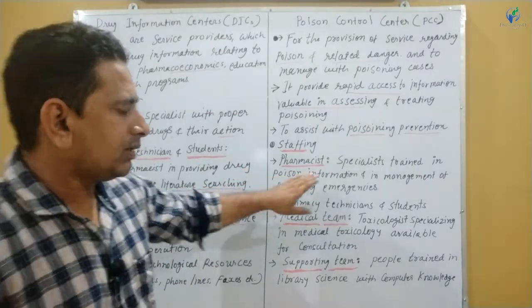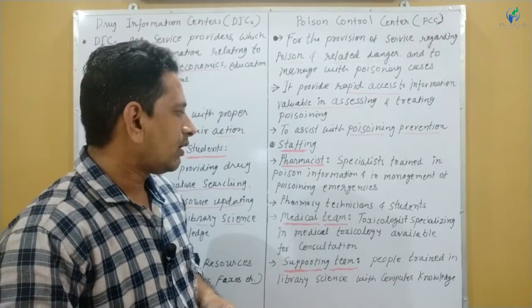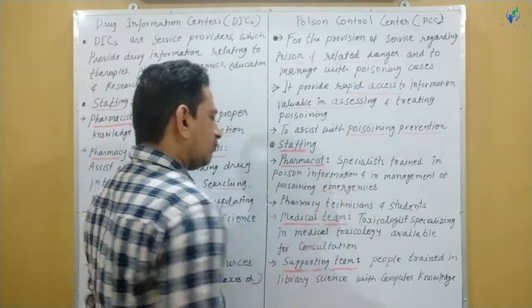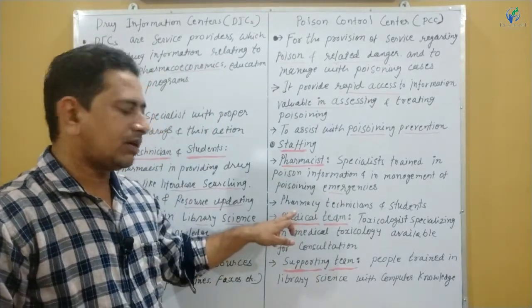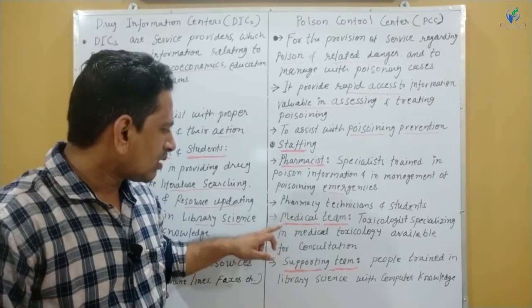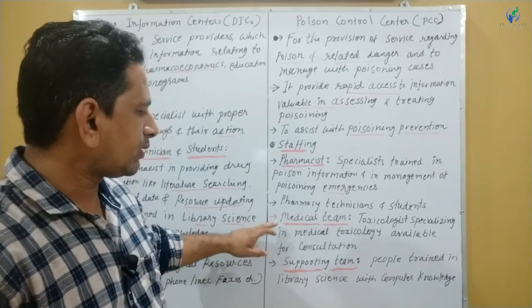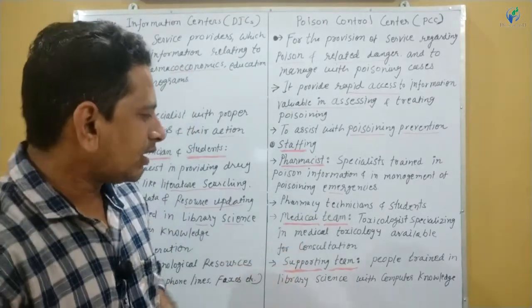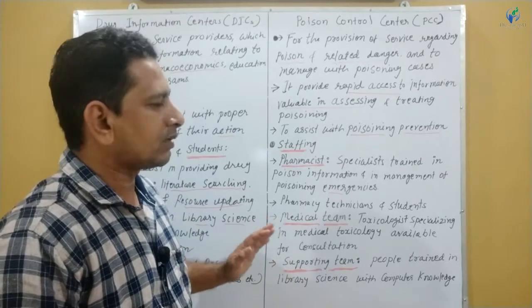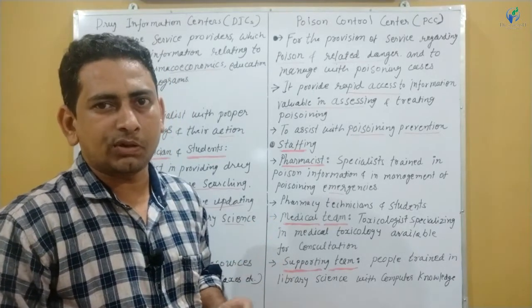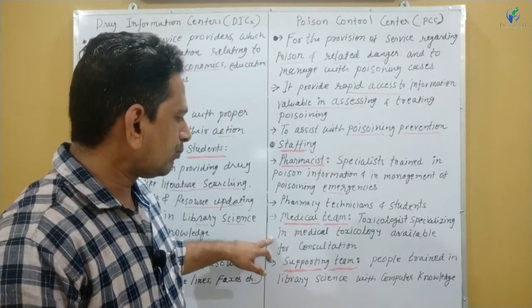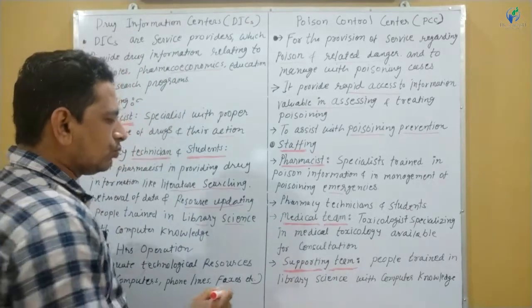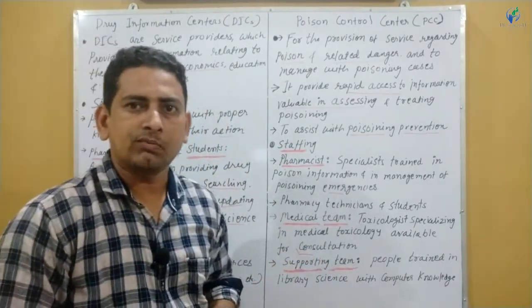Again, there will be a Pharmacist who will be a specialist trained in poison information. He will have complete information related to poison and its management in poisoning emergencies. Another staff member is the Pharmacy Technician and Student, who will assist the pharmacist. Then there is the medical team — a toxicologist specializing in medical toxicology. That means if there is any toxic effect of a particular substance, including poison-related toxic effects and chemical toxic effects, that will be conveyed by the toxicologist. He will also provide consultation services.